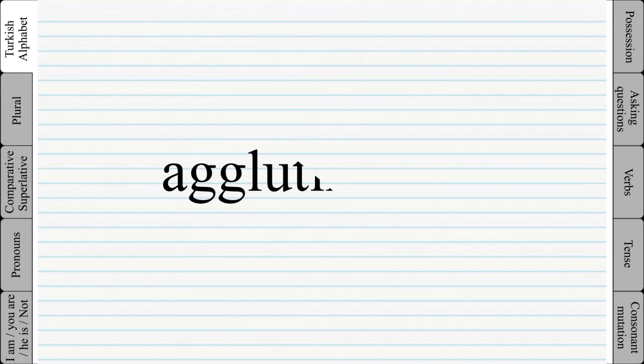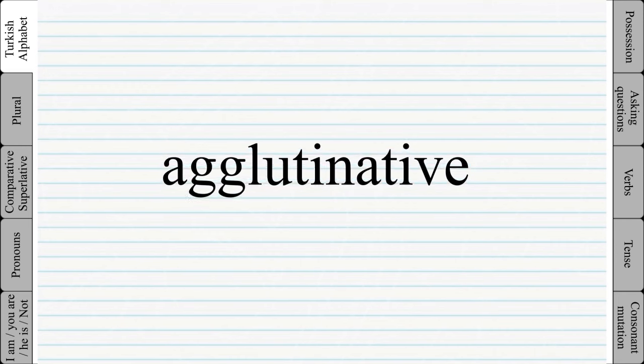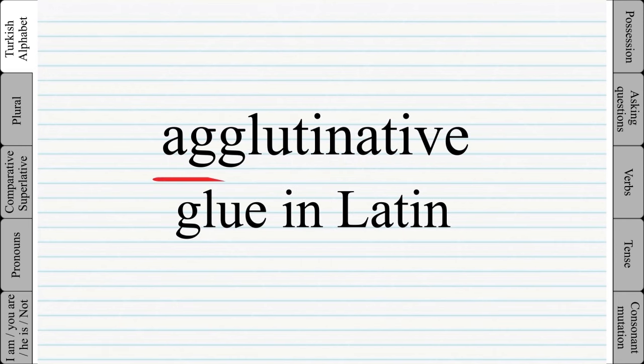Turkish is an agglutinative language. Agglutinative, meaning glue in Latin, means that you are just gluing words together. You are just adding prefixes and suffixes instead of using isolated words.